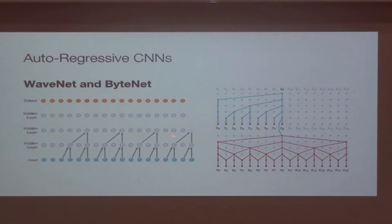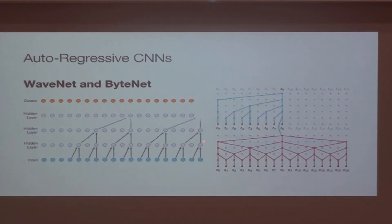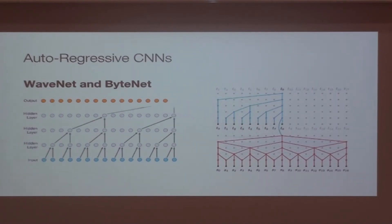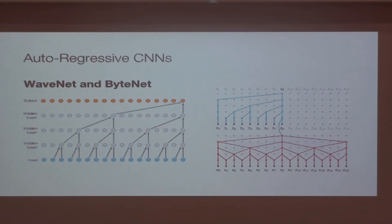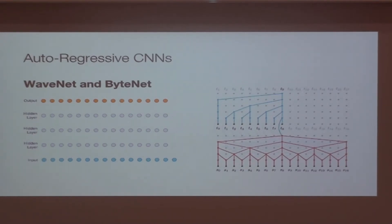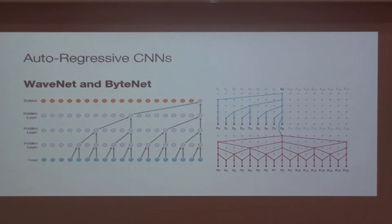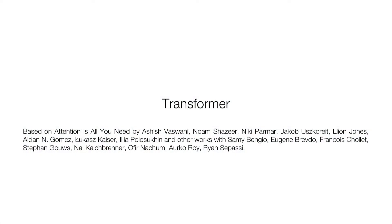People started using autoregressive prediction with RNNs, where it had big success with good results. But I'll introduce you to a different network called the transformer, which uses attention layers.